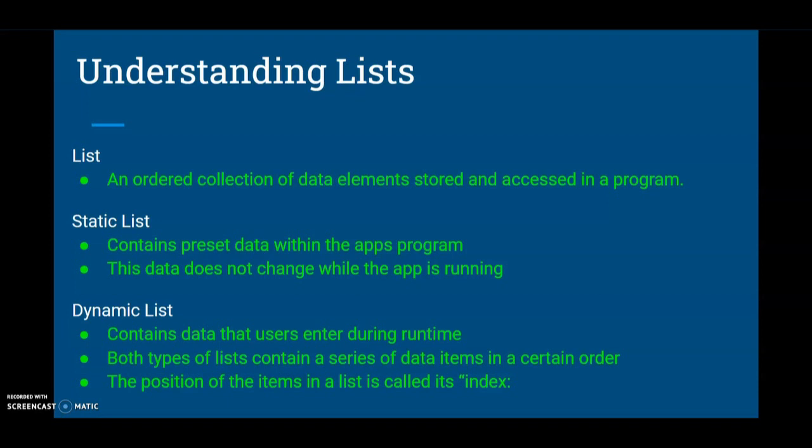A dynamic list, which we'll be doing in a later activity, contains data that the user can actually enter during runtime. Both types of these lists contain a series of data items in a specific order. This is known as the position of the items, or its index.